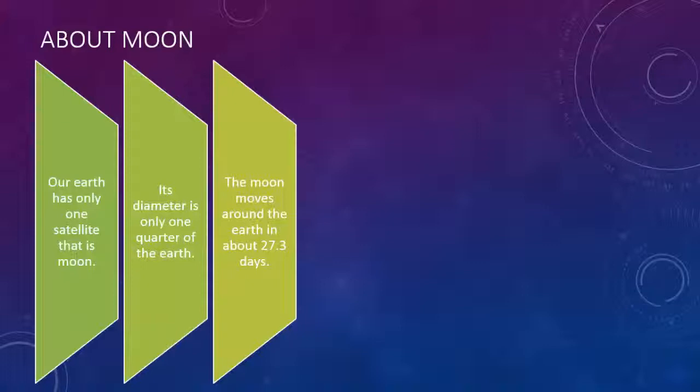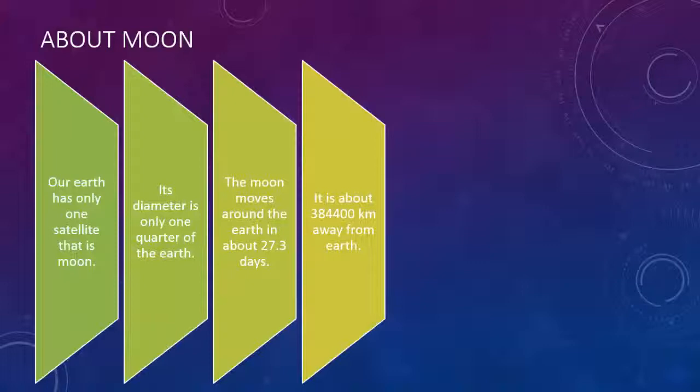The Moon moves around the Earth in about 27.3 days. It is about 384,400 km away from Earth.